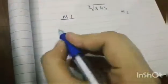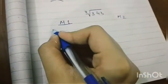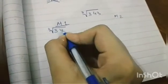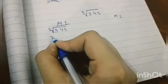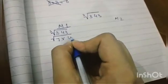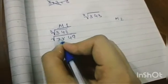For method 1, you can divide it within the cube root like this, finding multiples. 7 times 49 equals 343.